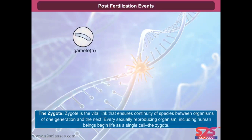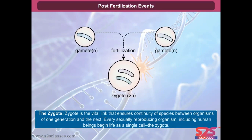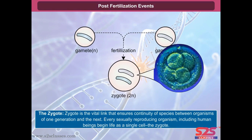Zygote is the vital link that ensures continuity of species between organisms of one generation and the next. Every sexually reproducing organism, including human beings, begins life as a single cell, the zygote.